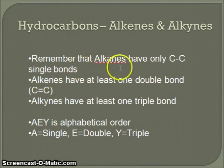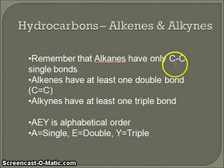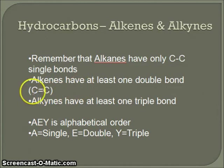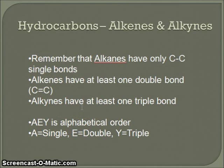Please remember that alkanes are hydrocarbons which have only carbon-carbon single bonds. They'll also have carbon-hydrogen single bonds. Alkenes are hydrocarbons that are going to have at least one double bond between carbon atoms. Alkynes are going to be hydrocarbons that have at least one triple bond between carbon atoms.